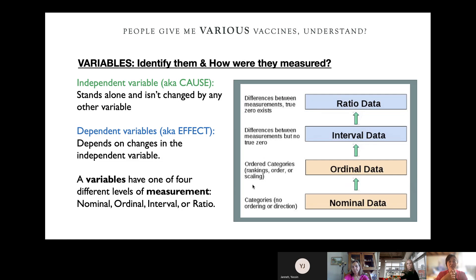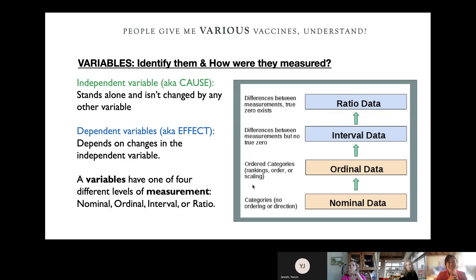Variables have one of four levels of measurement: nominal, ordinal, interval, or ratio. Ratio data has a true zero. Interval data measures between two marks but has no true zero — we use that a lot in Likert scales. Ordinal data, also called categorical, relates to rankings — like first, second, third. And nominal data has no ordering, no direction, and zero doesn't mean anything.